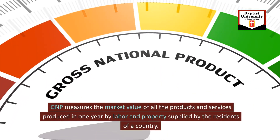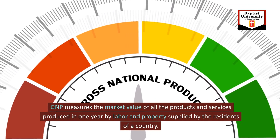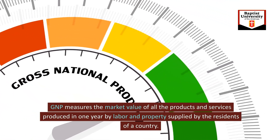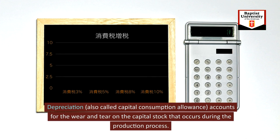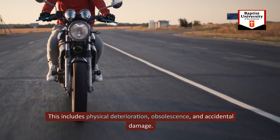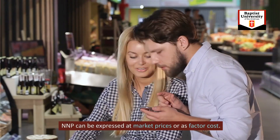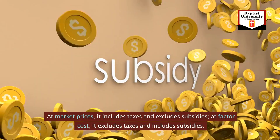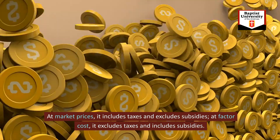GNP measures the market value of all products and services produced in one year by labor and property supplied by the residents of a country. Depreciation, also called capital consumption allowance, accounts for the wear and tear on the capital stock during production, including physical deterioration, obsolescence, and accidental damage. NNP can be expressed at market prices — which includes taxes and excludes subsidies — or at factor cost, which excludes taxes and includes subsidies.